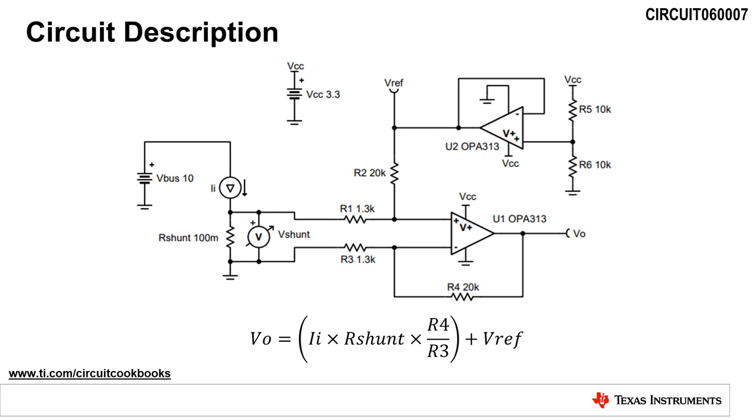This schematic represents a single supply, low side, bi-directional current sensing circuit. Current sensing circuits are used to convert and amplify an input current, also known as a load current, to an output voltage.